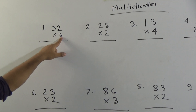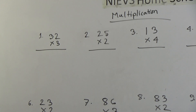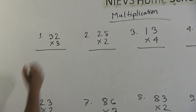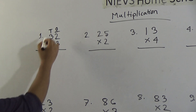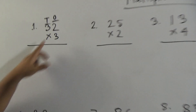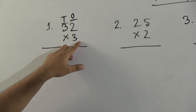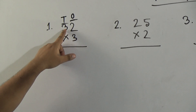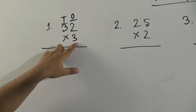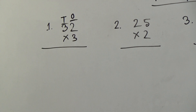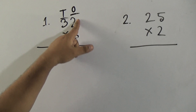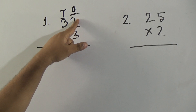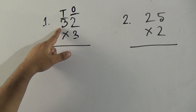Repeat: 32 multiplied by 3. Here, 2 is in the ones place and 3 is in the tens place. First we multiply this 2 by 3, and then we multiply this 3 by 3. When we multiply 3 by 2, we count the times table of 3: 3 ones are 3, and 3 twos are 6.